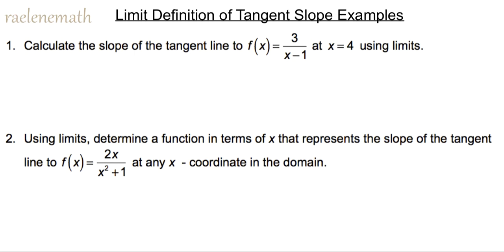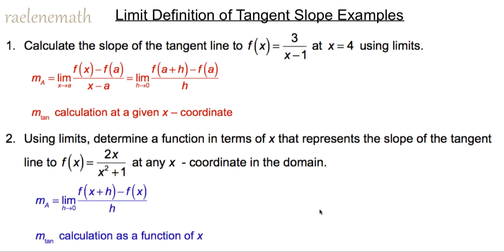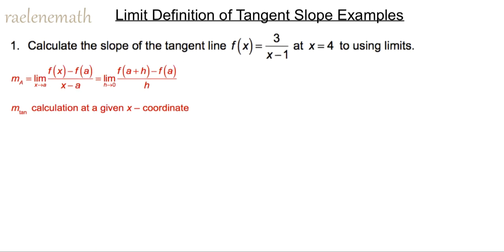Hey there, and welcome to Raylene Math. In this video, we're going to take a look at two examples where we calculate the tangent slope using the limit definition. In the first example, we'll actually calculate a value for the slope of the function f of x at x equal to 4, and we're going to do it in two different ways. In the second one, we're going to calculate a function which represents the tangent slope at any point in the domain of the function. So let's take a look at the first example.